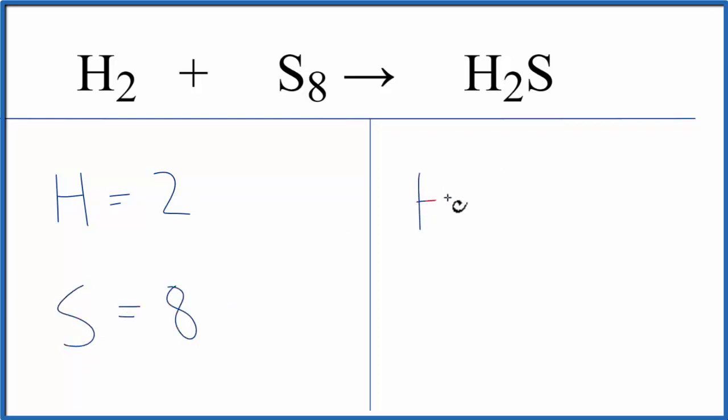Over on the product side, hydrogen, we have 2. And then sulfur, we only have 1.